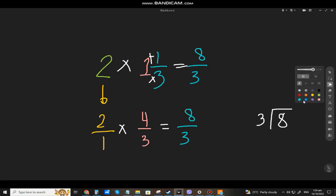How many 3s in 8, that will be 2. Times 3, that will be 6. 8 minus 6, that will be 2. Remainder 2.